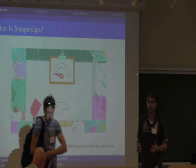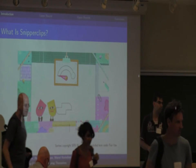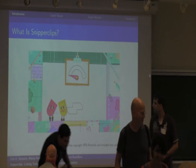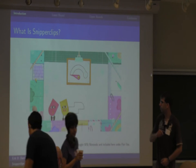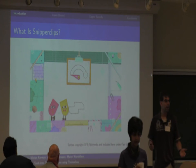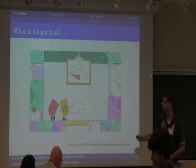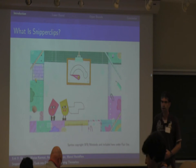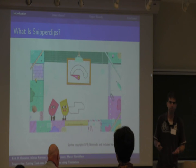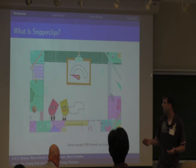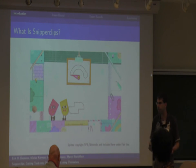What's Snipperclips? Snipperclips is a game that was recently released by Nintendo for the Switch. Essentially it is about these two shapes, and they have to work together to make some sort of target shape. These shapes can be rotated, but just by rotating you can't make the current shape, so there are more operations.